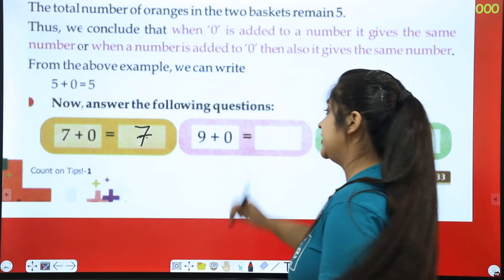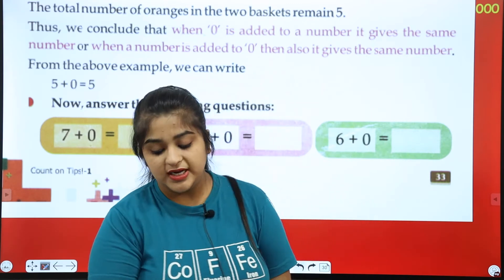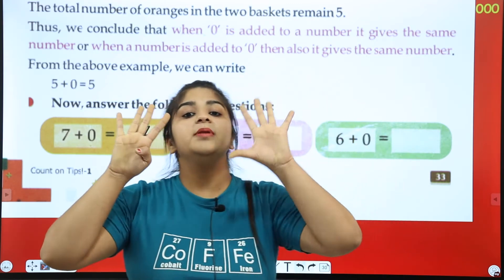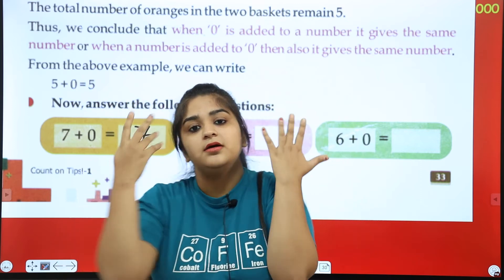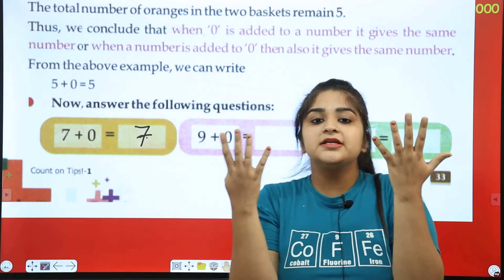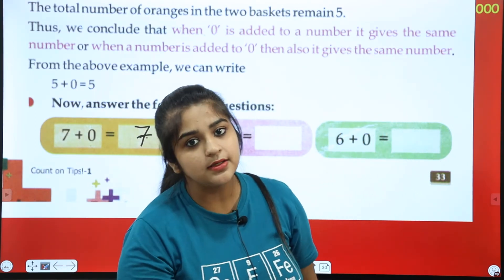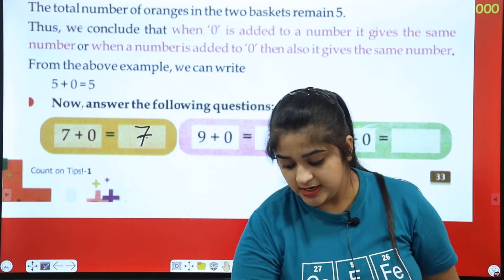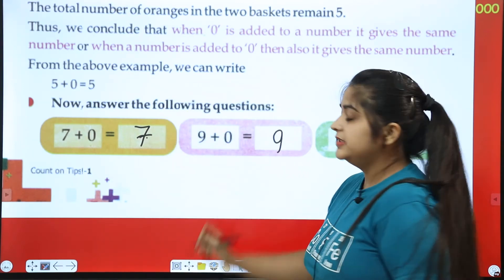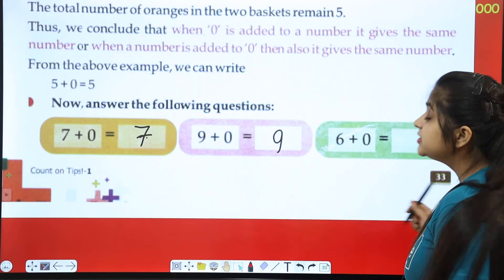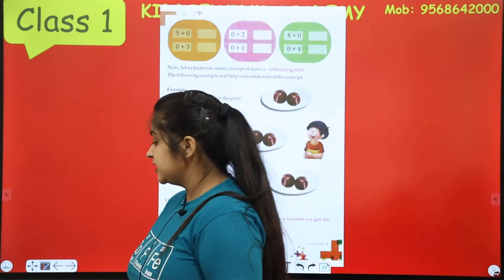If you add 0 to any number, then that number will remain. For example, 9 — we open 9 fingers — plus 0. Zero means you don't have to add anything. Because we have not added anything, the answer is 9. You have to complete page number 33 on this basis.